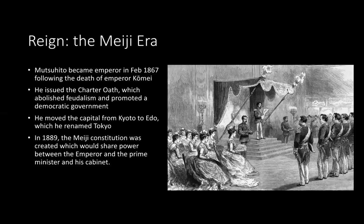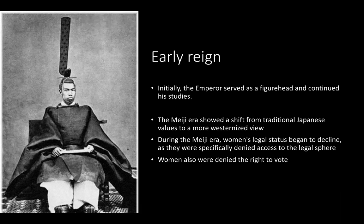During his early reign, he was only a figurehead for the government, and he mostly ignored politics and continued his studies in classical education. But the era started to show a shift from traditional values to a more Westernized view. During the Meiji era, the legal status of women began to decline as they were denied access to the legal sphere and denied the right to vote. You can see this image from early in his life, where he's wearing traditional Japanese clothing and looks quite young.